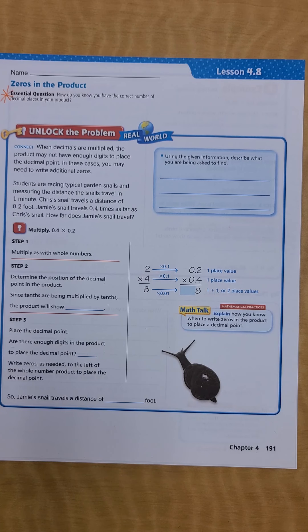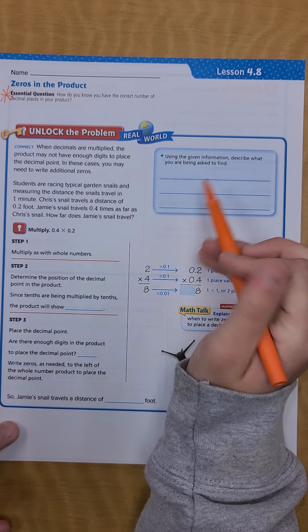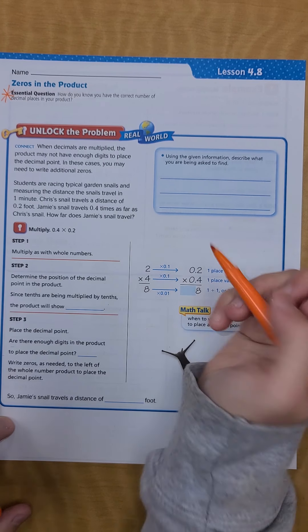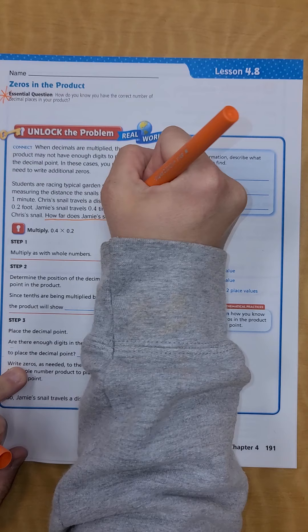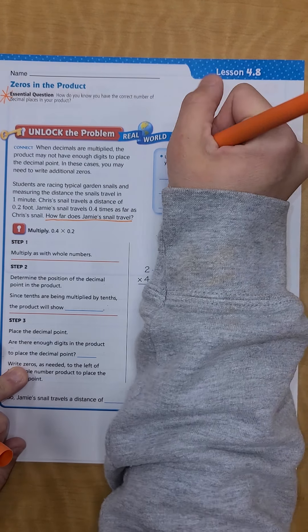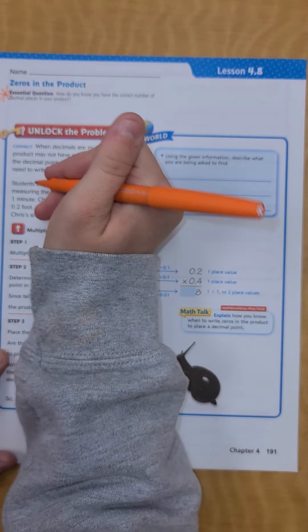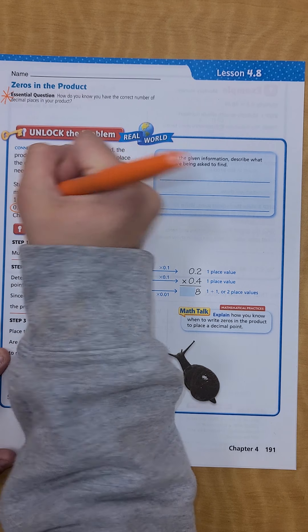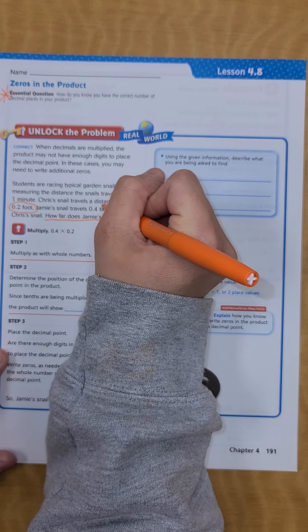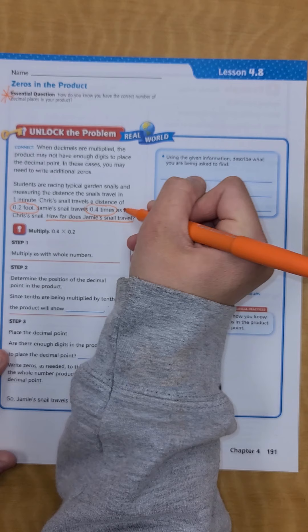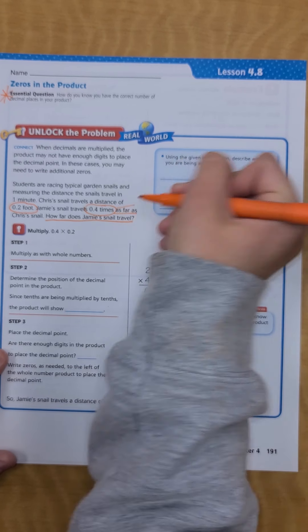How far does Jamie's snail travel? Describe what you are being asked to find. We're asked to find how far Jamie's snail is going to travel, so I'm just going to underline that. I'm also going to circle Chris's snail with two tenths of a foot and Jamie's snail travels four tenths times as far.